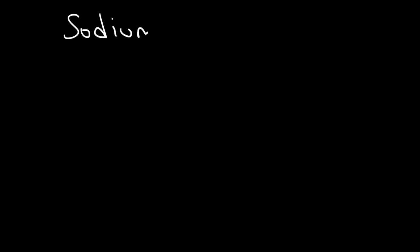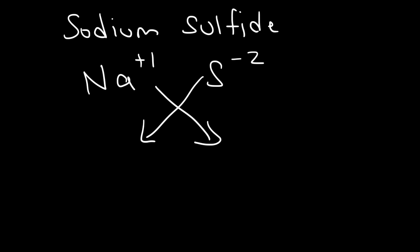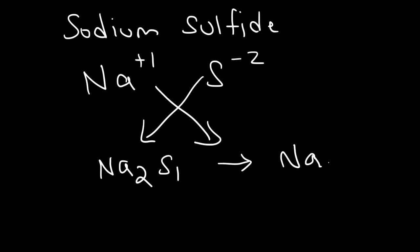Sodium sulfide: sodium has a positive one charge and sulfide has a minus two charge. Using the same crisscross method it's going to be Na2S1, but we don't have to write the one, so it's simply Na2S.